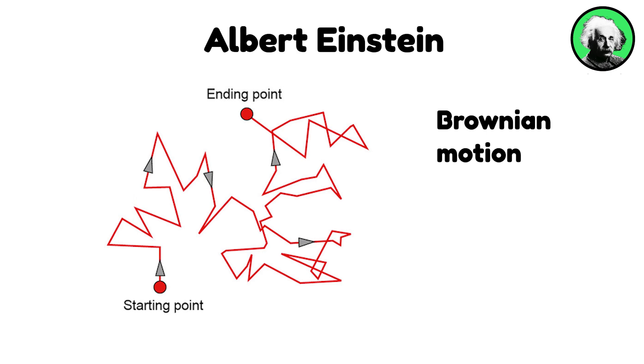Einstein's work on Brownian motion provided a theoretical explanation for the erratic movement of particles suspended in a fluid, offering empirical evidence for the existence of atoms and molecules.